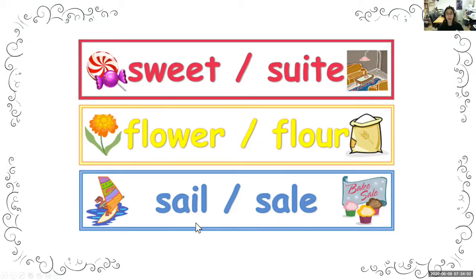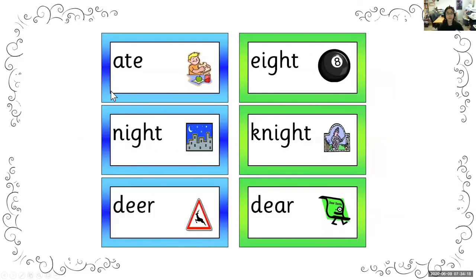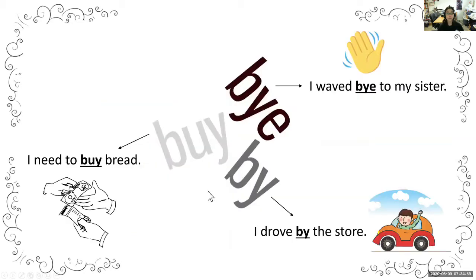Another example is sail and sale — the sail on a sailboat, versus a baking sale across the street. We also have ate and eight: 'I ate a sandwich' versus a ball with an eight on it in pool. Knight and night — the opposite of day is night, versus a knight in shining armor. And deer and dear — a deer as the animal, versus 'dear whoever' at the start of a letter.